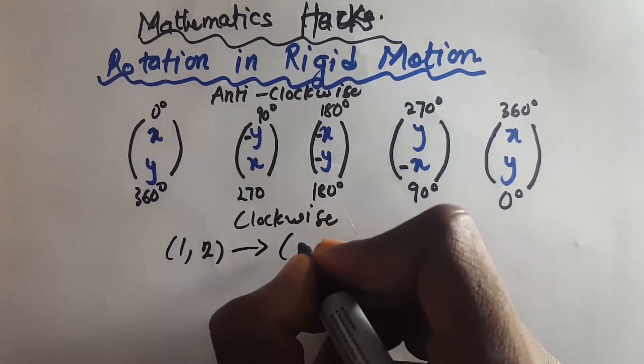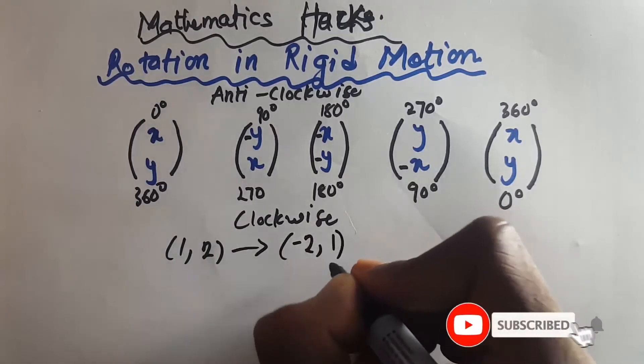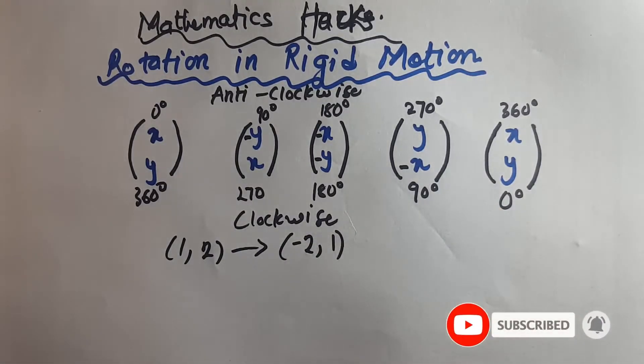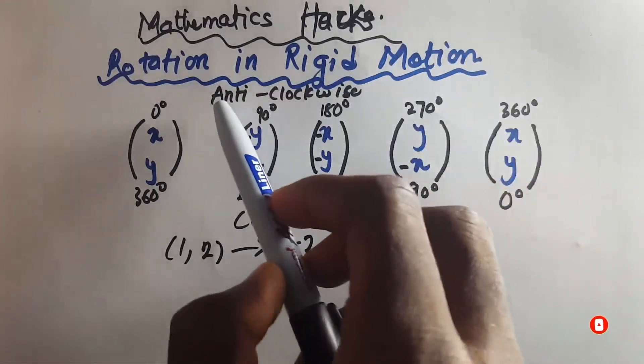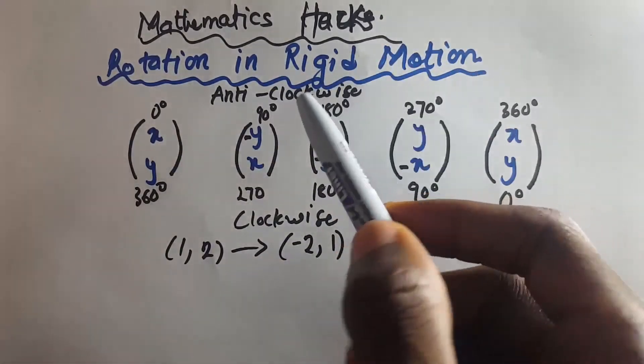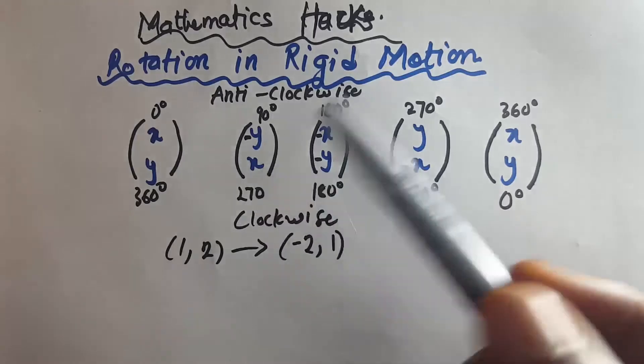For anti-clockwise rotation 180 degrees, it's both 180. It's going to be (-x, -y). You negate your x value and y value.